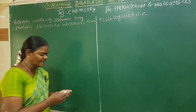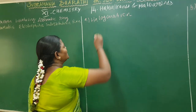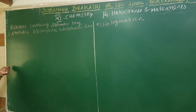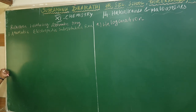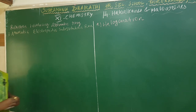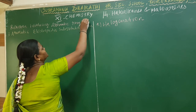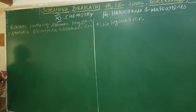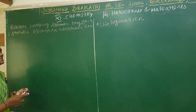This is unit 14: haloalkanes and haloarenes. In this section we will discuss the chemical properties of haloarenes. The first property involves aromatic haloarene reactions and substitution reactions with halogens discussed in the last video. In this section we learn the reactions involving the aromatic ring, the arenes group, and substitution reactions. First: aromatic electrophilic substitution reactions and types of reactions.